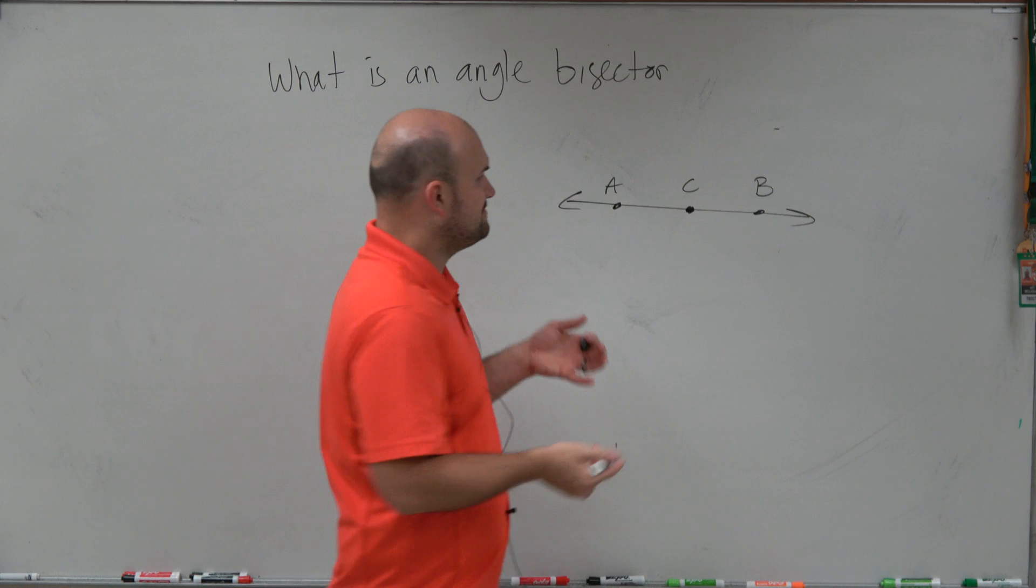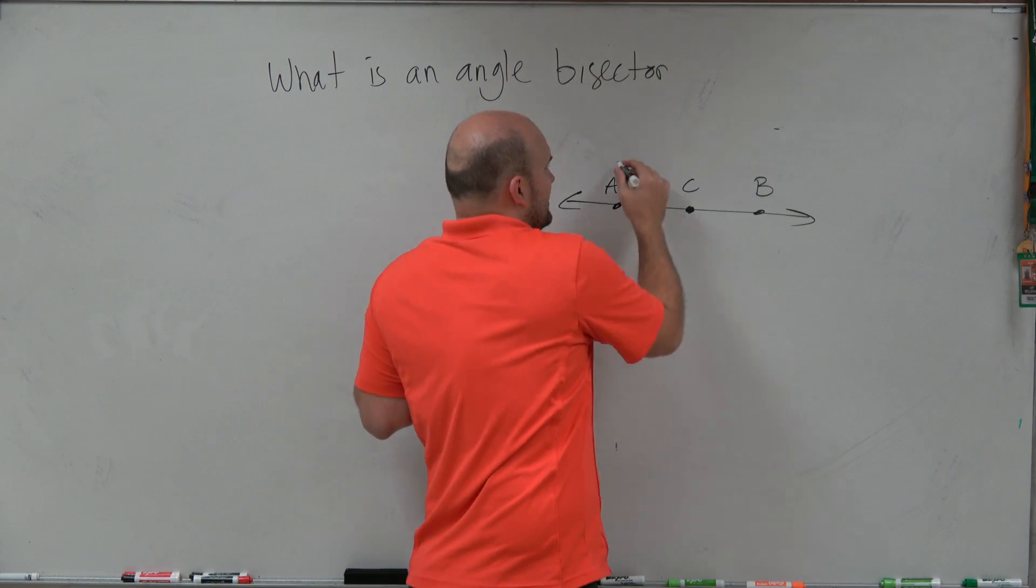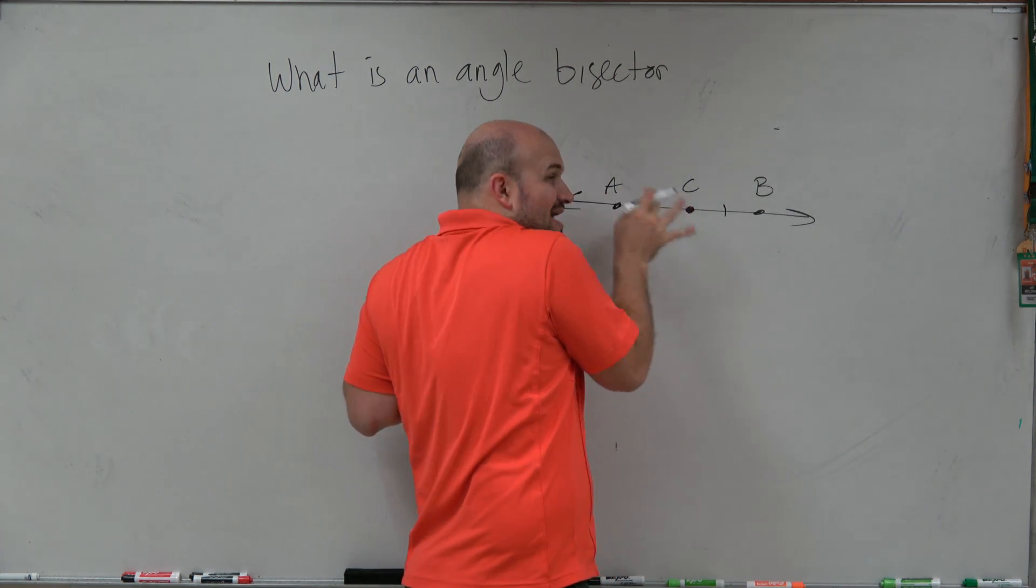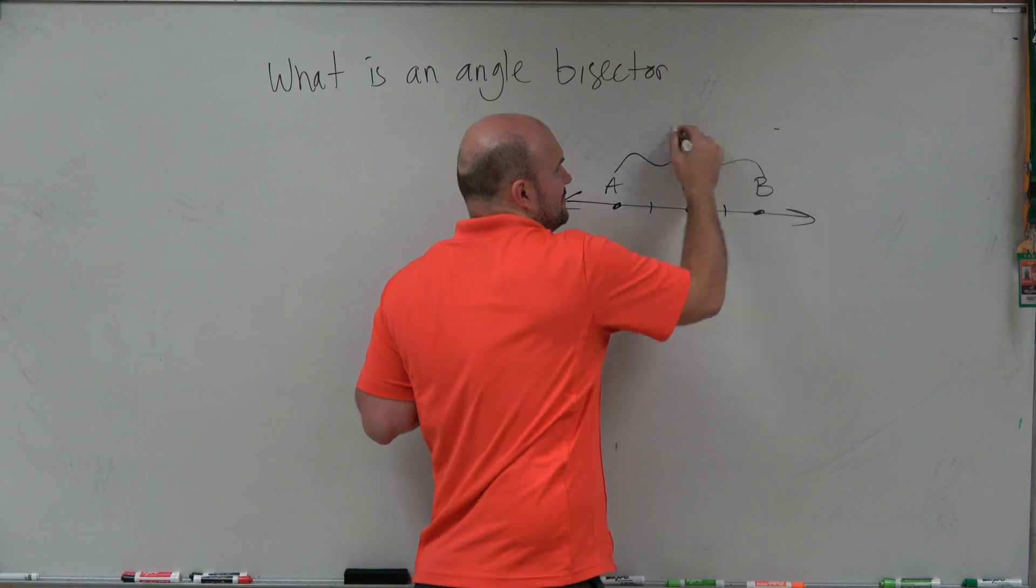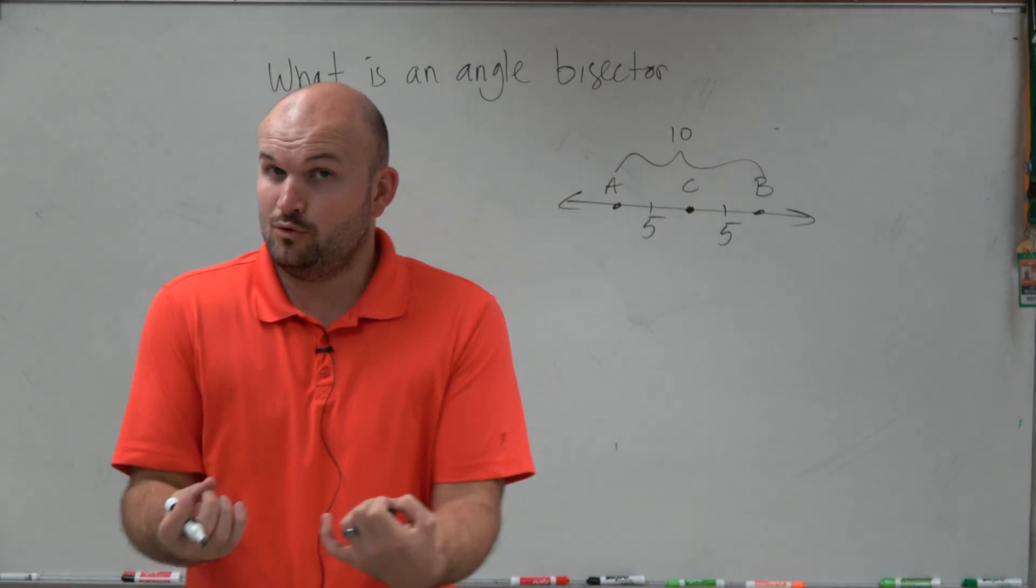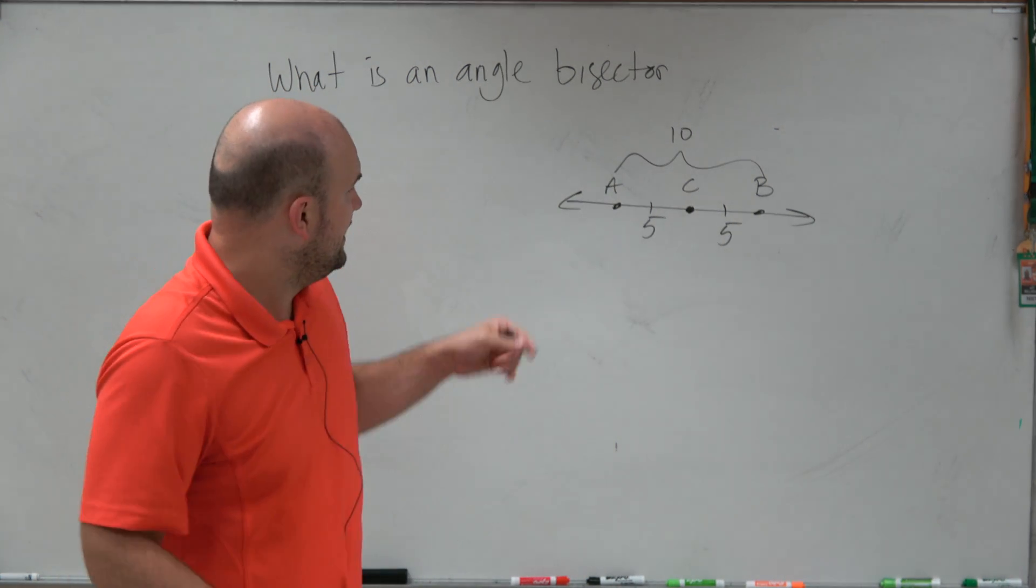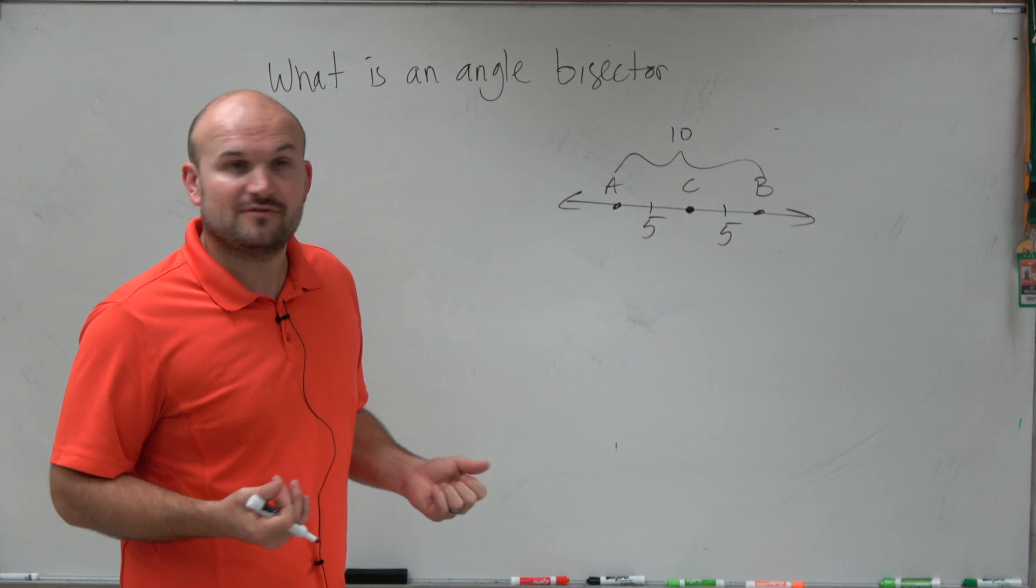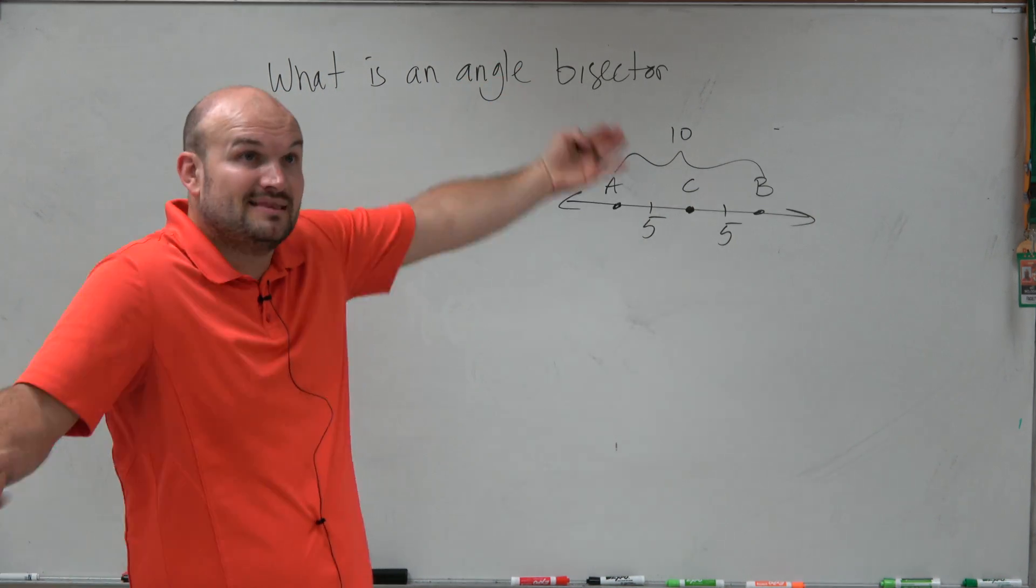And the reason why that was important is because C basically cuts this in half. It's right in the middle. So if this whole length was 10, that means the length from A to C and the length from C to B is equivalent or equal and they're both going to be 5, right? So 5 plus 5 equals 10. That is the midpoint.